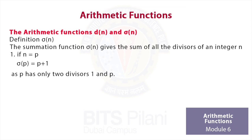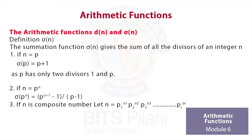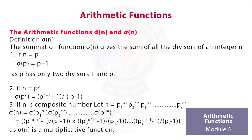What if n is p to the power α, like n = 8 = 2^3? In that case, σ(p^α) = (p^(α+1) − 1) / (p − 1). Lastly, if n is a composite number p1^α1 · p2^α2 · ... · pr^αr, then σ(n) = σ(p1^α1) · σ(p2^α2) · ... · σ(pr^αr), which expands to [(p1^(α1+1) − 1)/(p1 − 1)] · [(p2^(α2+1) − 1)/(p2 − 1)] · ... · [(pr^(αr+1) − 1)/(pr − 1)], since σ is a multiplicative function.